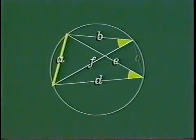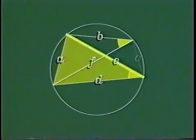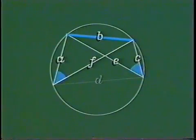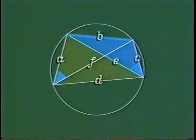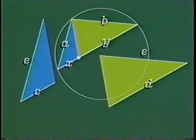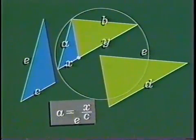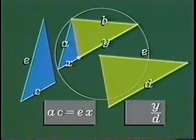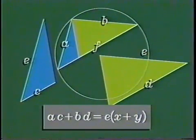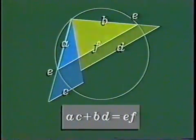Now let's see why Ptolemy's theorem is true. These two angles are equal because they cut off the same chord. Rotate this triangle until this diagonal of length E lies along this edge of length B — the two shaded triangles are similar. Likewise, these two angles are equal because they cut off the same chord, so rotating this triangle reveals another pair of similar triangles. If we rotate both triangles, we see that they join along a common side that divides this diagonal of length F into two pieces of length X and Y. Now we have two pairs of similar triangles, so ratios of corresponding sides are equal. And the rest is just a little algebra. The final result is Ptolemy's theorem on quadrilaterals inscribed in a circle.